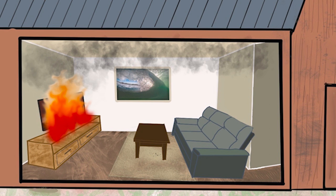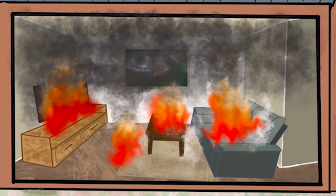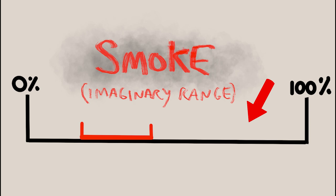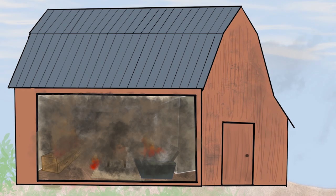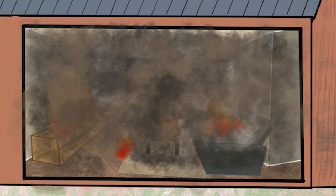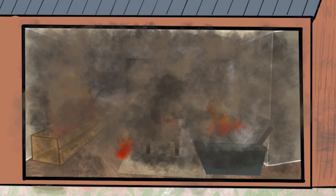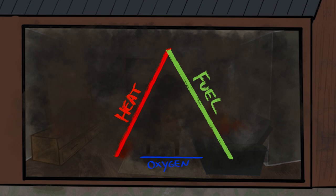As the fuels continue to pyrolyse, more and more flammable gases build up. This means we are going to be well above the upper explosive limit, and therefore it's going to be far too fuel-rich to support combustion. Even after the fire has died down, these gases can continue to build up, because pyrolysis does not need oxygen to occur. The heat remaining from the fire will continue to pyrolyse the fuels and completely fill the room with potentially flammable smoke. Looking at the fire triangle, we have lots of heat and lots of fuel, but nowhere near enough oxygen to support combustion.